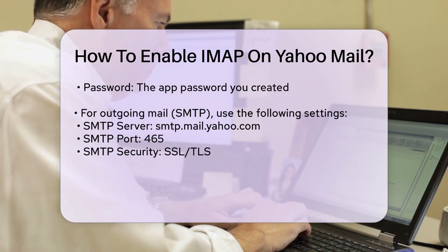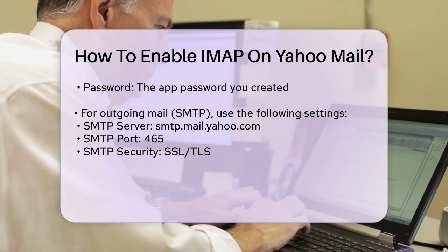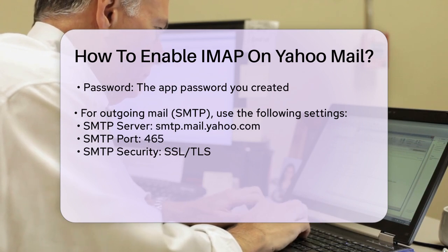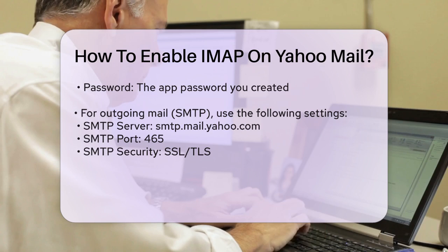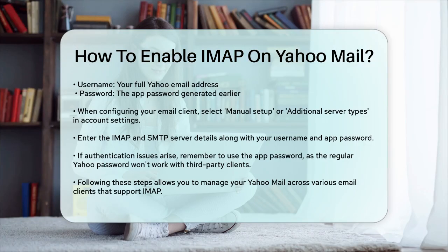When setting up your email client, you'll typically go to the account settings or preferences, choose to add a new email account, and select Manual Setup or Additional Server Types. Then enter the IMAP and SMTP server details along with your username and app password. If you encounter any issues with authentication, remember that using the app password is key — your regular Yahoo password won't work with most third-party email clients when two-step verification is enabled.